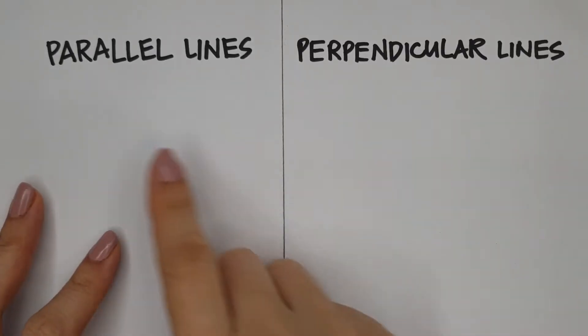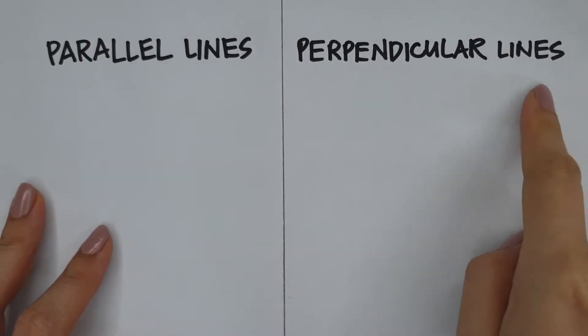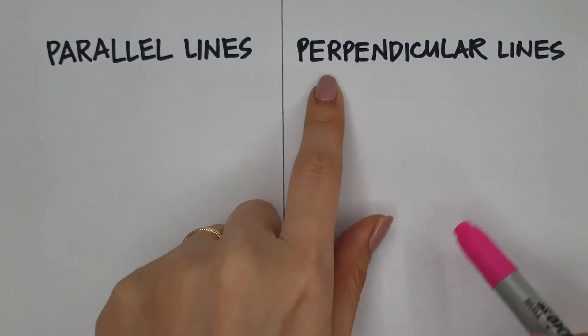Hi guys, today we're going to be talking about the two types of lines that we have learned, parallel lines and perpendicular lines. Can you remember what these lines are?